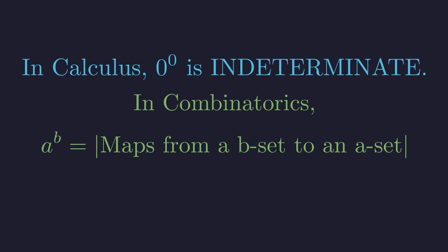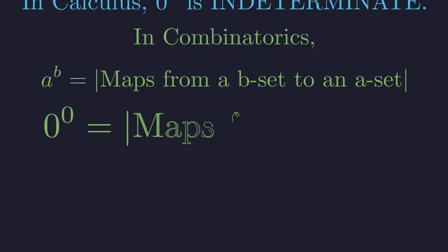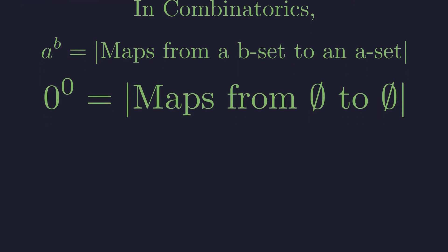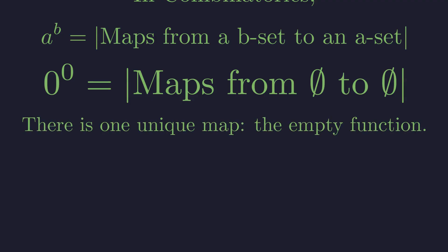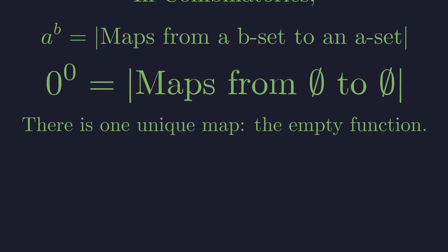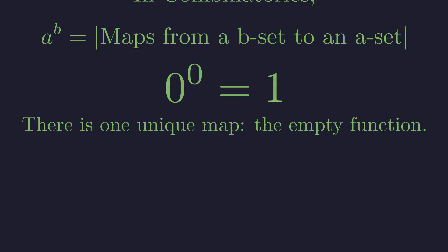But in combinatorics, a to the power of b counts the number of functions from a set with b elements to one with a elements. So zero to the power of zero counts the maps from the empty set to the empty set. In set theory, a function is a set of ordered pairs. The empty function is the empty set of ordered pairs, and it's the unique function from the empty set to itself. Thus there is exactly one such map. Therefore, in combinatorics, zero to the power of zero is defined to be one, as this definition is necessary for many counting formulas like the binomial theorem to hold true.